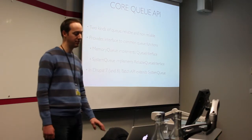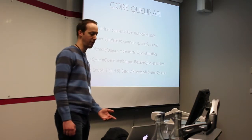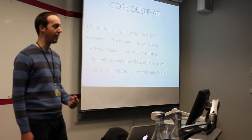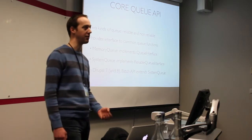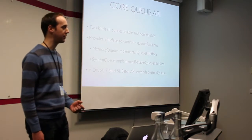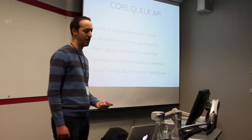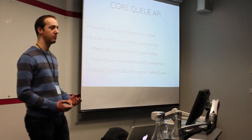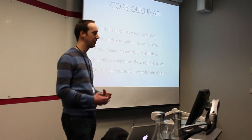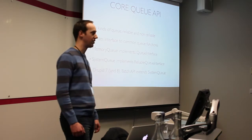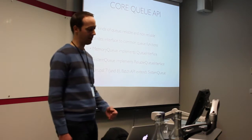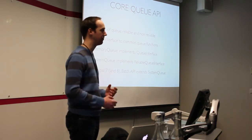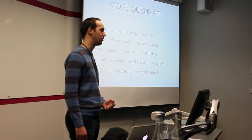The core Queue API exposes two types of queue: a reliable queue and a non-reliable queue. A reliable queue preserves the order of messages — first in, first out — and guarantees that every item will be processed at least once. A non-reliable queue does best efforts to maintain order, but you have a chance that order won't be preserved or items might get lost, such as an in-memory queue where if the server restarts, those queue items are lost.